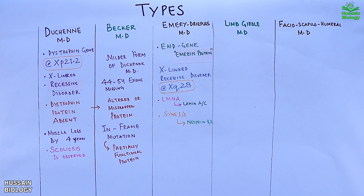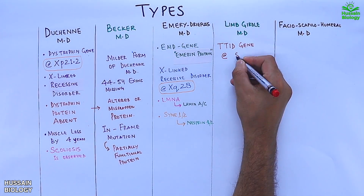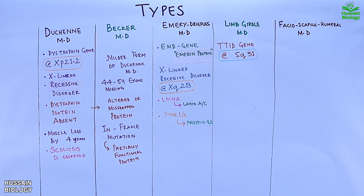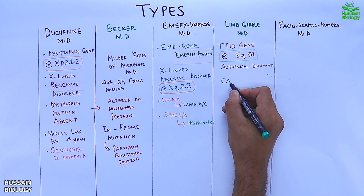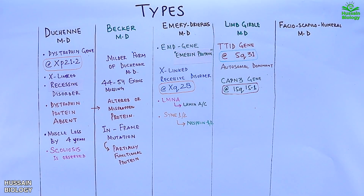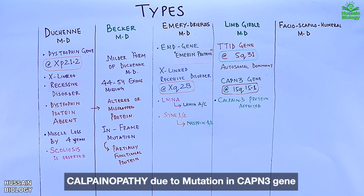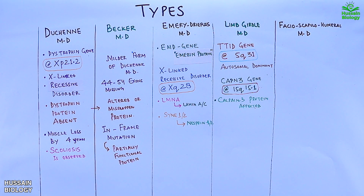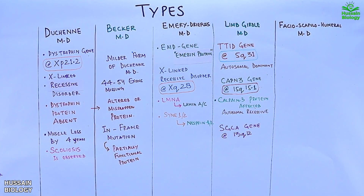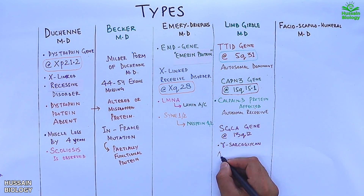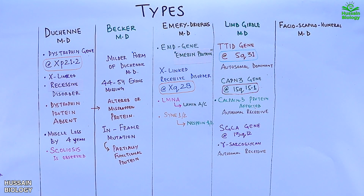The TTID gene at 5q31 shows autosomal dominant inheritance in Limb-girdle muscular dystrophy. The CAPN3 gene at 15q15.1 shows autosomal recessive inheritance, and the CAPN3 protein is affected — which is why this form is also termed calpainopathy. A third gene mutation involved is the SGCA gene at 13q12, which makes the gamma-sarcoglycan protein.